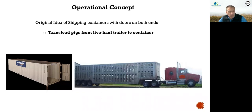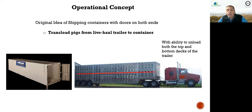Here's our operational concept. We took the original idea of a shipping container — this is just a picture from Google — with doors on both ends. We transload the pigs from the live haul trailer into the container; that's the basic concept. We also wanted the ability to unload both the top and bottom decks of the trailer. Here in the USA our live haul trailers haul pigs and many are double deckers, as in many other countries. Some trailers are triple deckers, but most are double deckers with an upper deck and a lower deck.